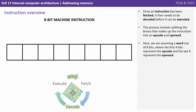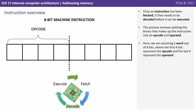First of all let's have an overview of what an instruction is. Once an instruction has been fetched it then needs to be decoded before it can be executed. This process involves splitting the binary that makes up the instruction into an opcode and an operand. Here we're assuming a word size of eight bits where the first four bits represent the opcode and the last four bits represent the operand.